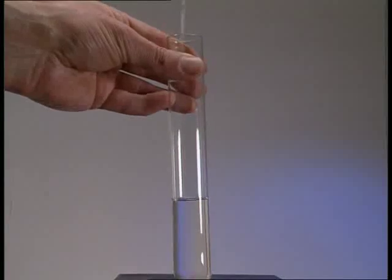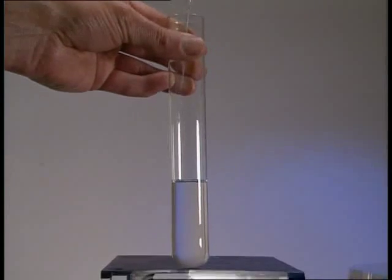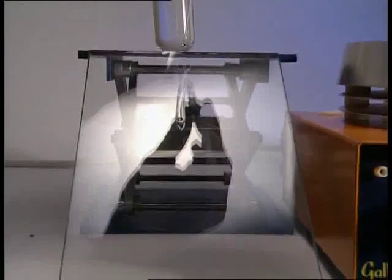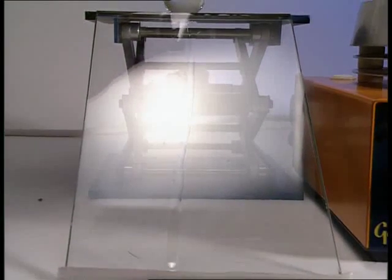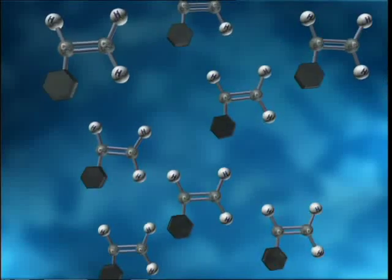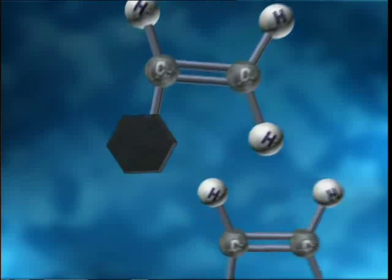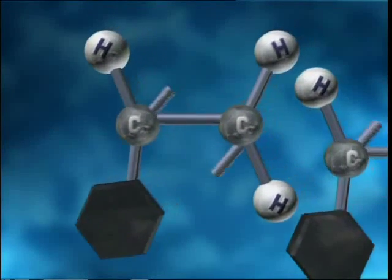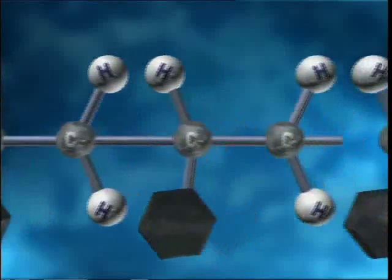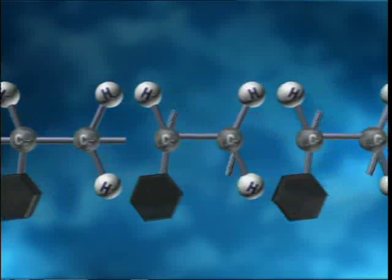It starts life as the monomer styrene, a runny, clear liquid that looks and behaves like water. This is the chemical structure of styrene. It forms a polymer by opening up its double bond. The end of one monomer bonds to the end of another, and so on. This is called polymerization.